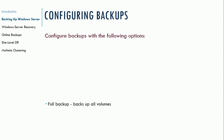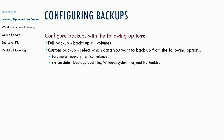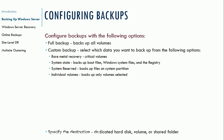To configure backups, you've got several options: a full backup, which backs up all of the volumes; custom backup, where you can select which data you want to back up; bare metal recovery, which covers just critical volumes; system state, which backs up the boot files, Windows system files, and the registry; system reserved, which backs up the files on the system partition; and individual volumes, which backs up only volumes you selected, like the F drive or D drive.